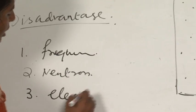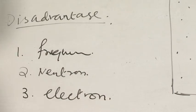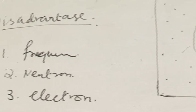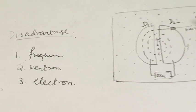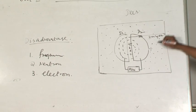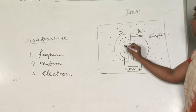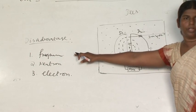Third, you will not be able to keep electrons inside the D1 and D2. If you are keeping an electron, the mass of the electron is very less, and the electron will not be accelerated with your frequency.